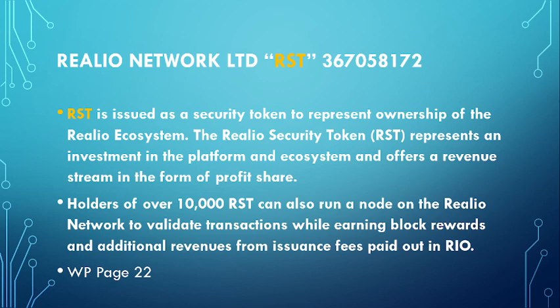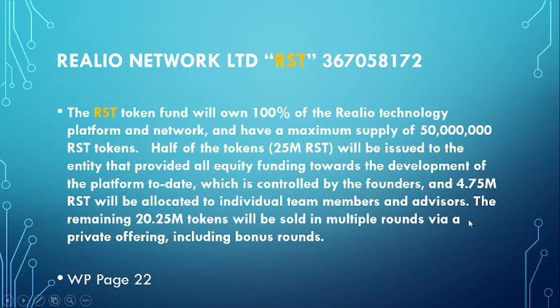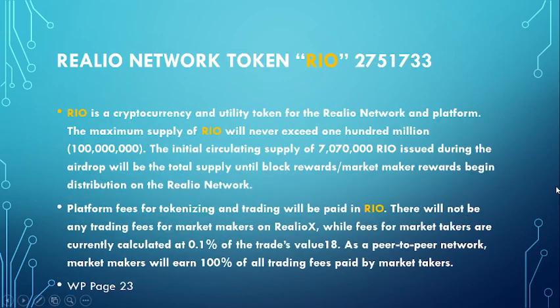The RST token fund will own 100% of the Realio technology platform and network, with a maximum supply of 50 million RST tokens. Half — approximately 25 million RST — will be issued to the entity that provided all of the equity funding towards development to date, which is controlled by the founder. So it is 50% founder-owned. Additionally, 4.75 million RST are allocated to individual team members and advisors, and the remaining 20 million tokens are sold across multiple rounds via private offerings.